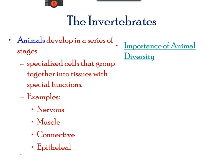Most animals are motile, at least during some stage of their life. They are also heterotrophs or saprobes, dependent on autotrophic organisms, such as plants.